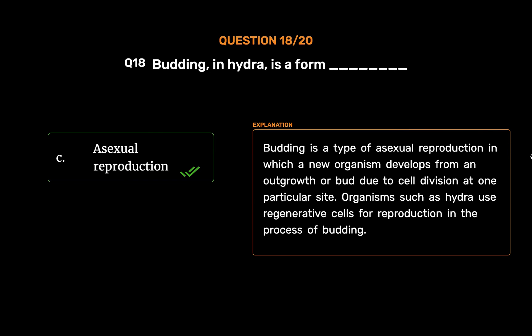Budding is a type of asexual reproduction in which a new organism develops from an outgrowth or bud due to cell division at one particular site. Organisms such as hydra use regenerative cells for reproduction in the process of budding.